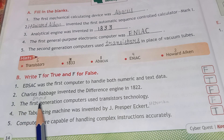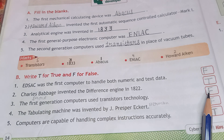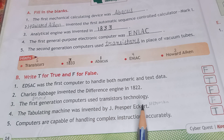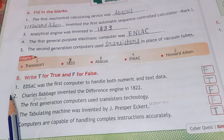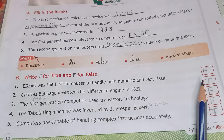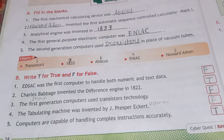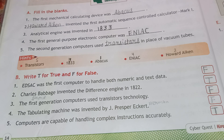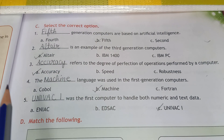The third one is false. The fourth one is false. The fifth one is true. To summarize: the first is false, the second is true, the third is false, the fourth is false, and the fifth is true.